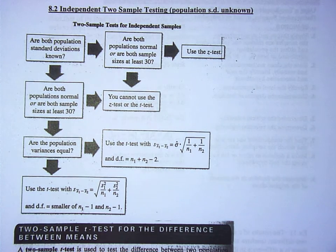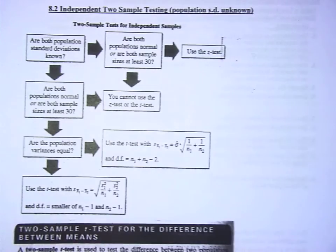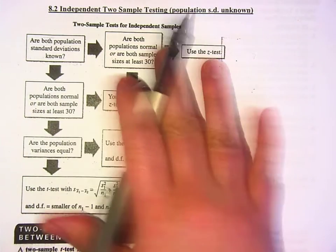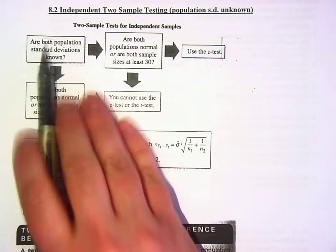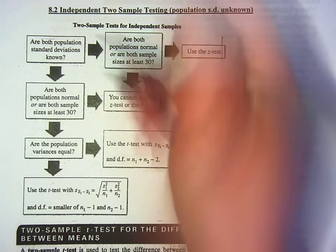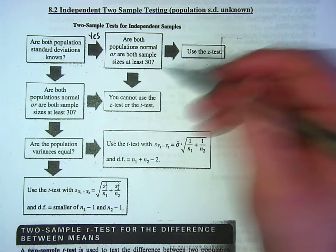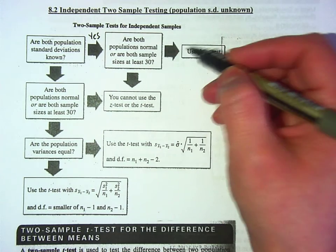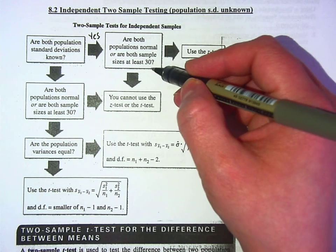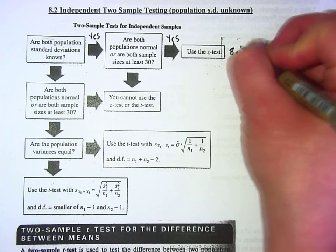And so let's talk about where we're going. This flow chart helps you see. It says, are both population standard deviations known? If the answer is yes, then if both populations are normal or sample sizes are at least 30, and that's another yes, you use the Z test. This is 8.1 right here.